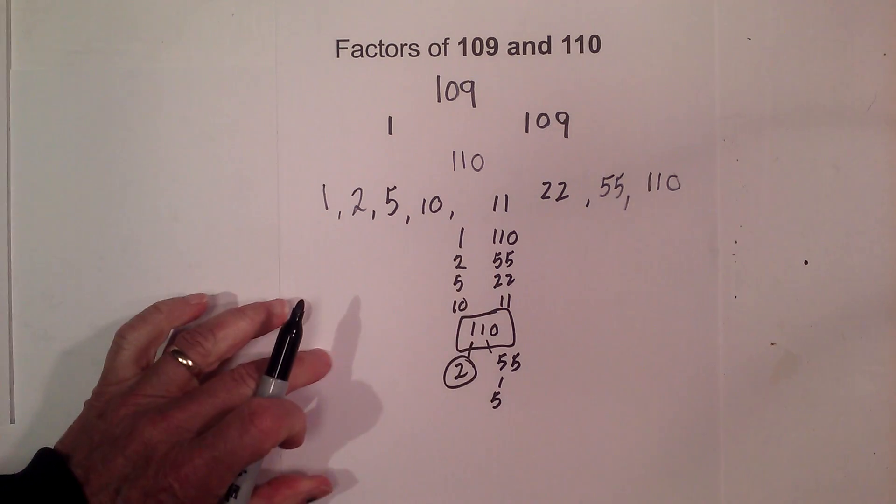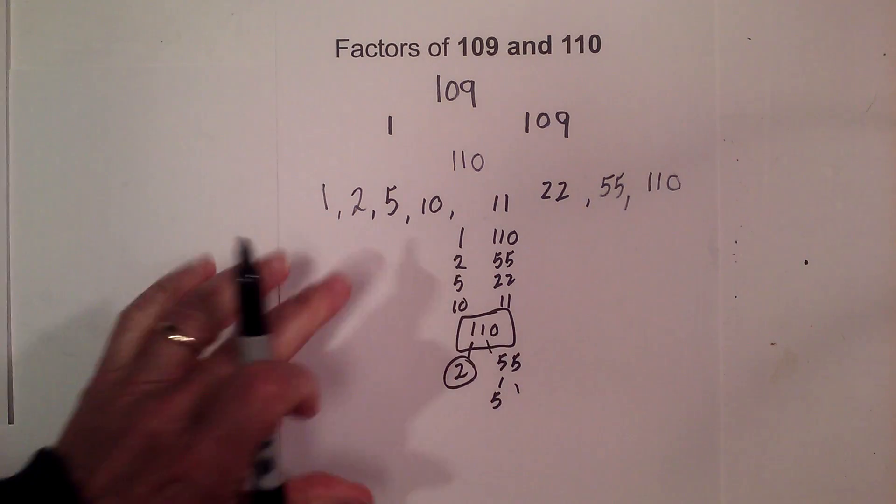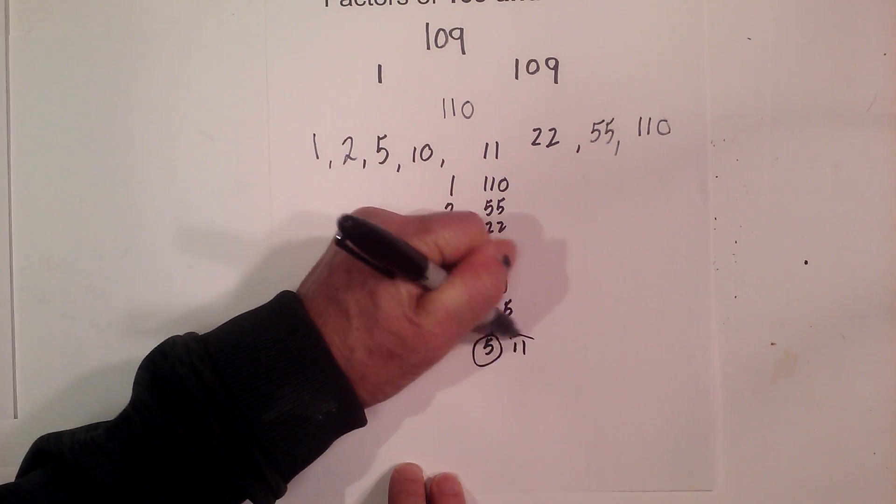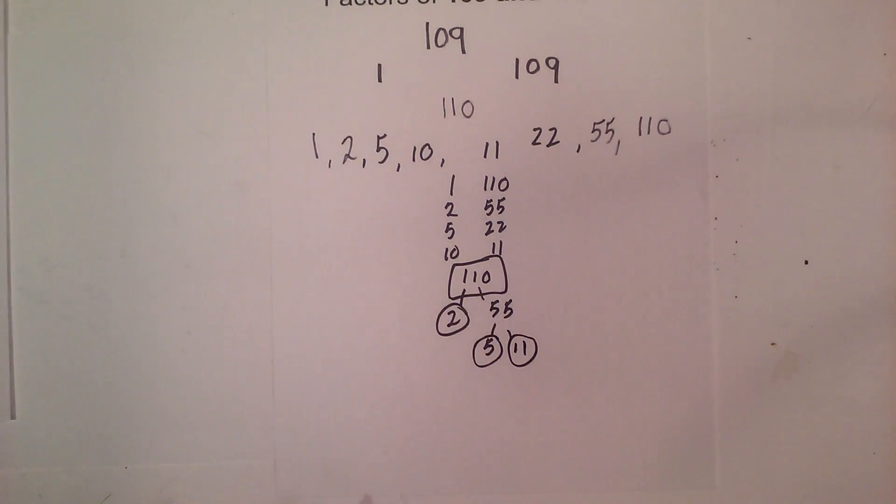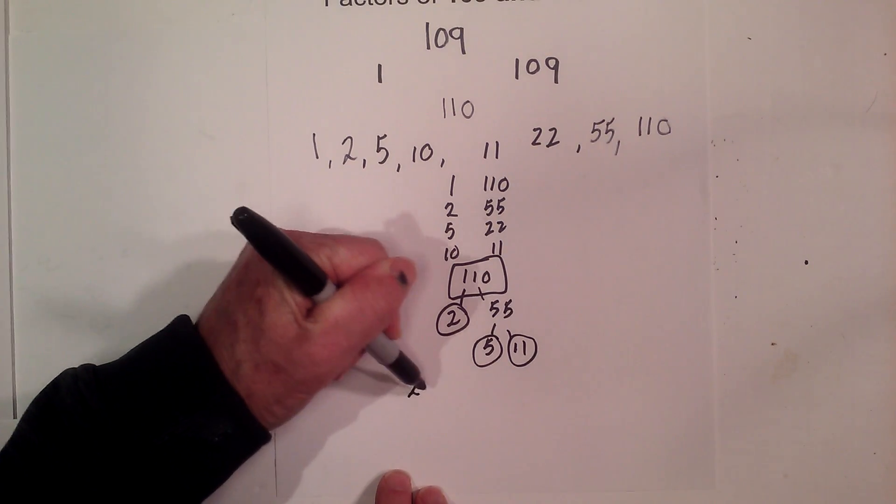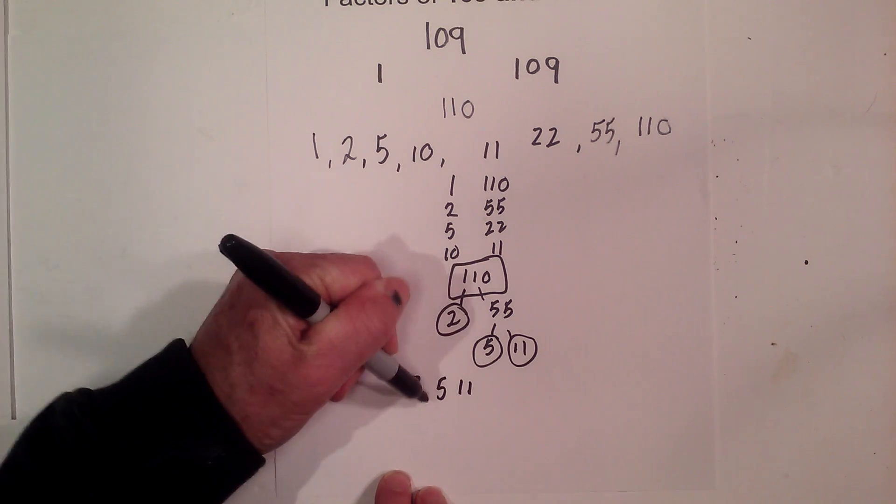Now 5 times, let me move this up just a little bit, 5 times 11 is 55. Circle both of them because they are prime. So the prime numbers of 110 are 2, 5, 11.